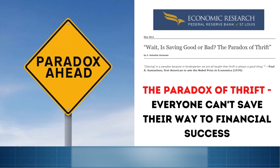An important concept to understand here is the paradox of thrift. This describes how, when one person saves, it means that some other person isn't getting that income. When the entire economy starts to do this, we call this a recession. In other words, everyone can't save their way to financial success. In fact, the system needs this constant flow of existing money to flow through it, and additional new money to be created to fuel future growth.